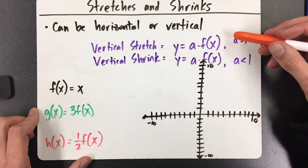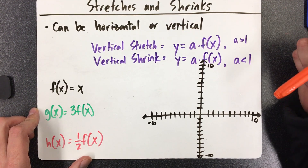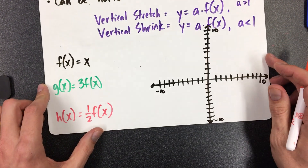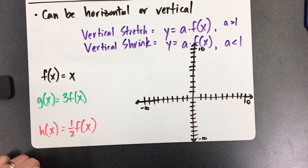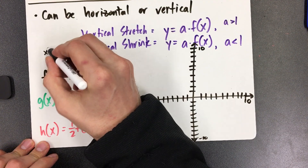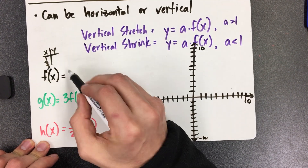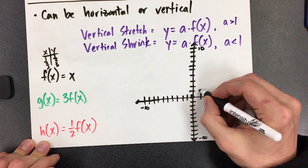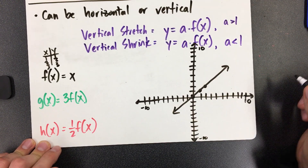How do you tell if it's a stretch or a shrink? You look at what number is the new coefficient on f(x). Here's an example: f(x) equals x — that's our basic parent function. If I did a little x and y chart for it with 1, 2, 3, it would just go 1, 2, 3. It's the basic line that goes right through the origin and has a slope of 1.